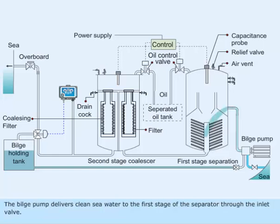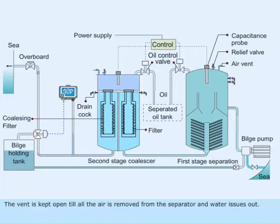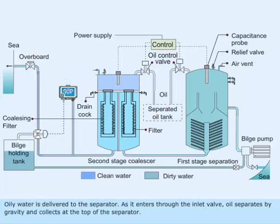The bilge pump delivers clean sea water to the first stage of the separator through the inlet valve. The vent is kept open till all the air is removed from the separator and water issues out. Oily water is then delivered to the separator. As it enters through the inlet valve, oil separates by gravity and collects at the top of the separator.